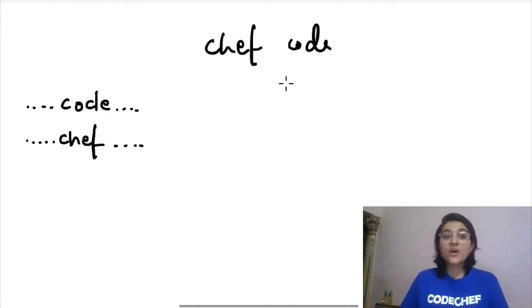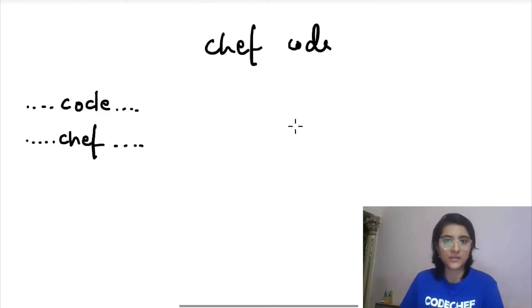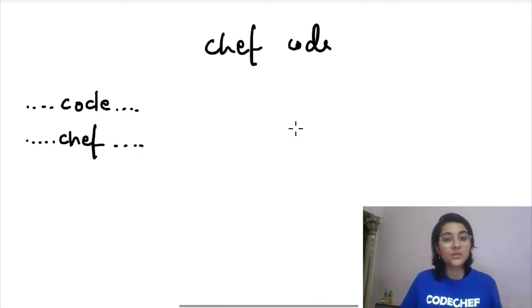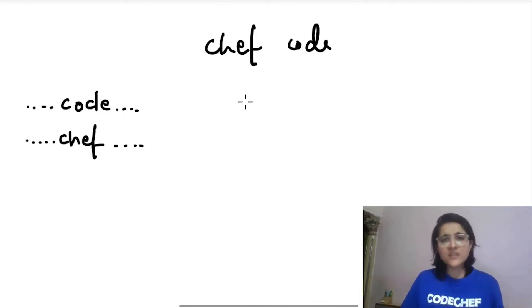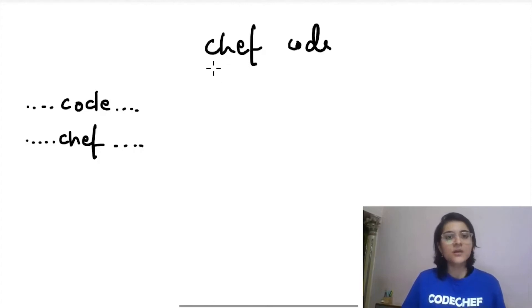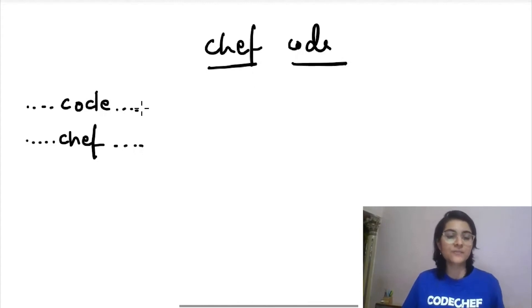In the question we are also ensured that the words 'code' and 'chef' do appear in the string — at least once each. As we start traversing the string, we keep our eyes open for one of these two words: if we find 'chef' or 'code', we will have to take some action.